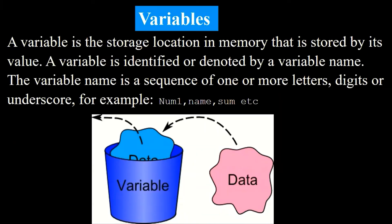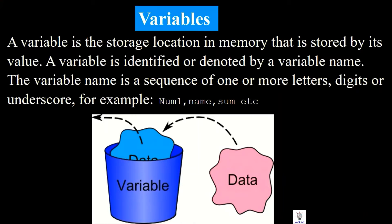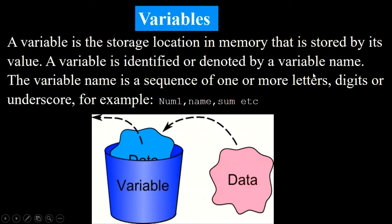Number one: a variable is a storage location in memory that stores a value. Just like in mathematics, in a programming language variables are used to store values in the computer's memory. A variable is identified or denoted by a variable name.